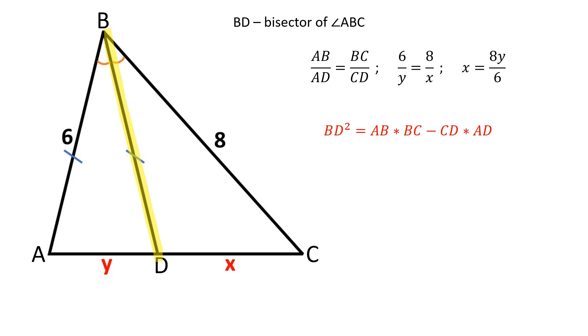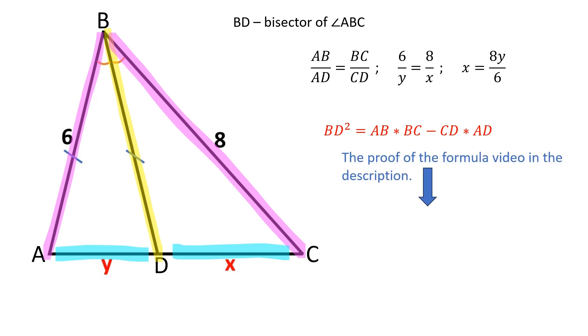BD squared is equal to the product of AB and BC minus the product of CD and AD. I have a video on my channel with the proof of this formula which I will leave in the description below.